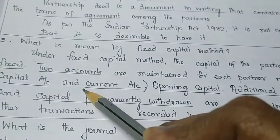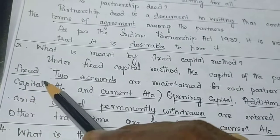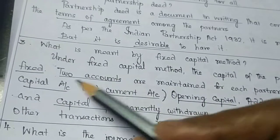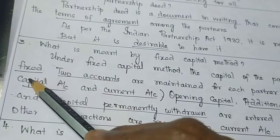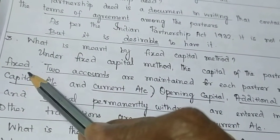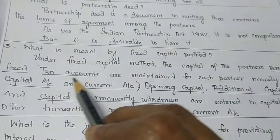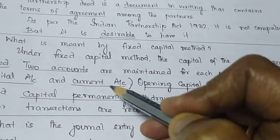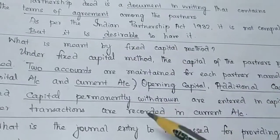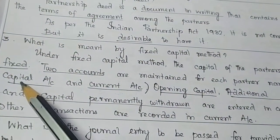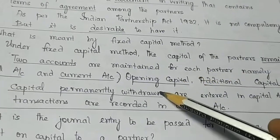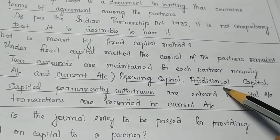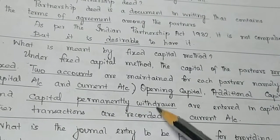One is the Capital Account and the other is the Current Account. The Capital Account is fixed. All adjustments go to the Current Account — Salary, Interest on Capital, Interest on Drawings, Drawings, and Share of Profit. The Capital Account records Opening Capital and Additional Capital introduced. Permanent withdrawals from capital are recorded as Drawings.